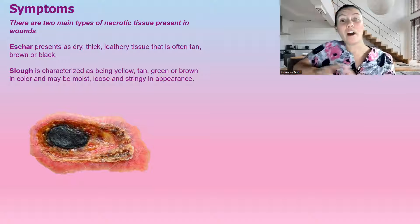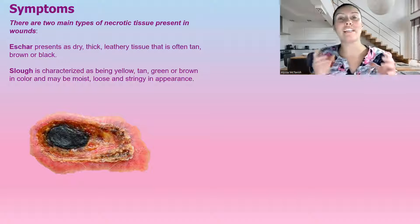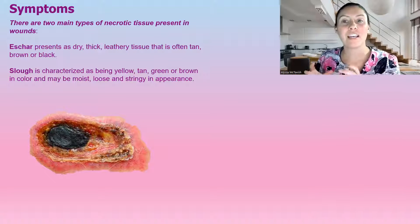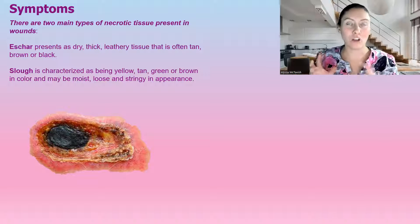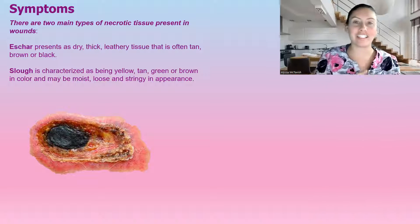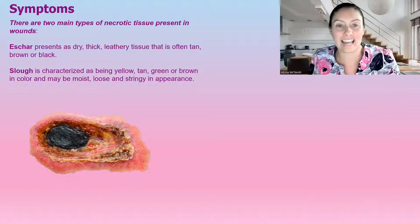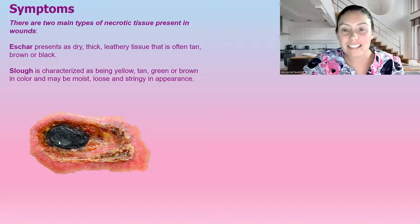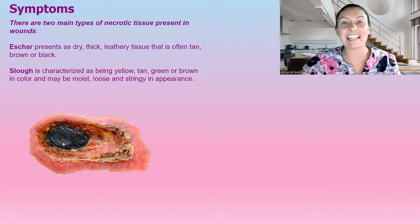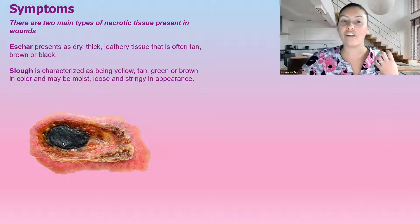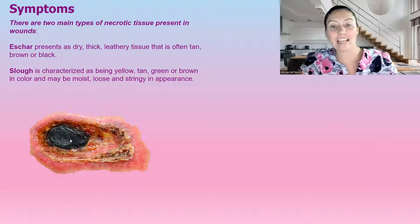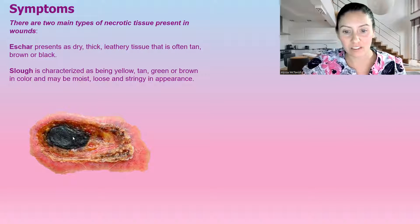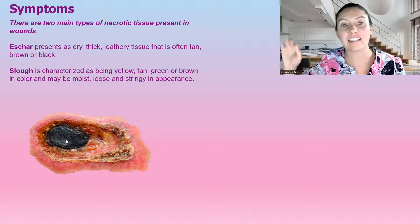So symptoms — what are we going to see? There are two main types of necrotic tissue that will present. First, we have our eschar. This is our black, thick, leathery tissue — it's often tan, brown, or black. You can see that right here — see the black? That's the eschar.